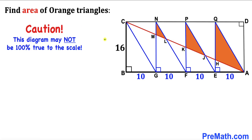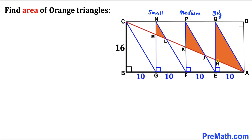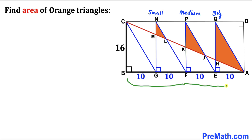Please note that this figure may not be 100% true to scale. Let's get started. First, let's label the orange triangles: the big one, the medium one, and the smallest one. Next, we need to find the lengths of segments EH, FK, and GM before calculating the areas. We can observe that the horizontal length AB is 10 + 10 + 10 + 10 = 40 units.